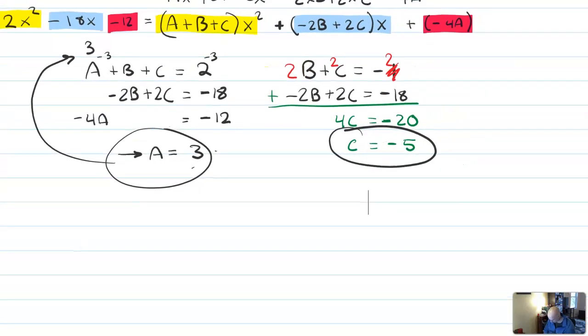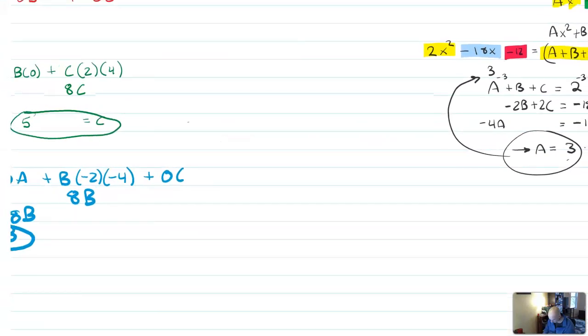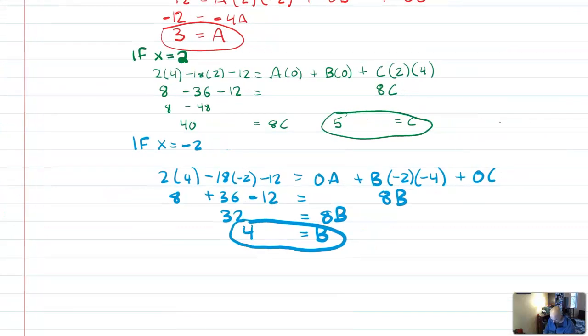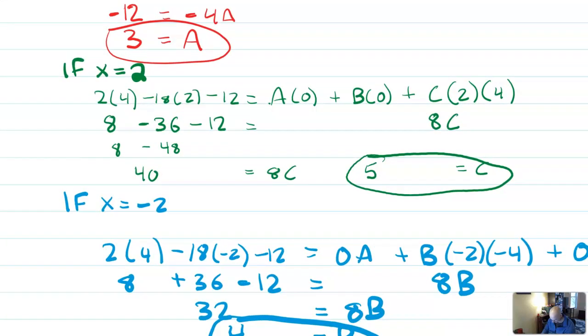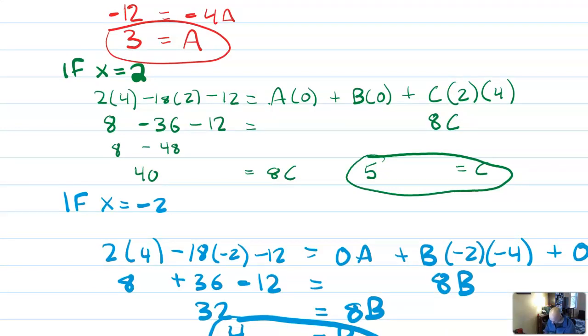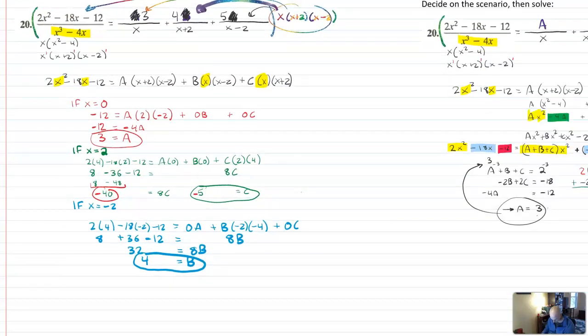And sorry, I just had to pause to check something. c is, in fact, equal to minus 5. And if you remember from the last video, I solved for c by plugging in x equals 2. And I made a big oopsie and forgot that 8 minus 48 is actually minus 40, which means that c would equal minus 5 in the other video as well. I'll have to go back and correct that.